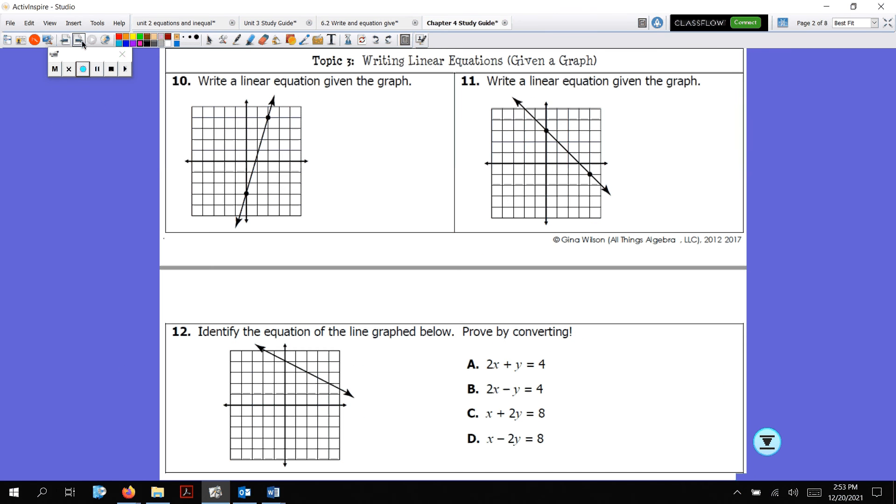Topic three, writing linear equations from a graph. What do you need? You need a slope and you need a y-intercept. You need your b and your m. It's pretty easy to look at a graph and be like, oh, I know what it is. Here is my b. This is b. What's that value for y? One, two, three. So my b is negative 3.